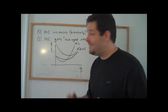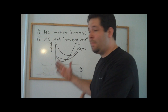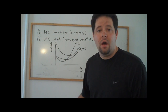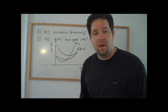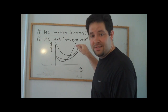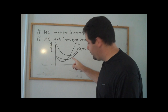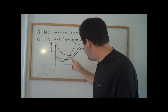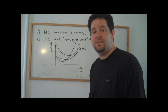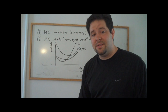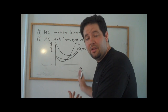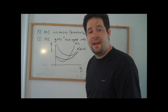As marginal cost increases, it increases past the point of average cost and average variable cost. So when marginal cost is above both, both are increasing. When marginal cost is above average variable cost, average variable cost is increasing, because we're averaging in higher per unit cost, and so that's going to increase that average.